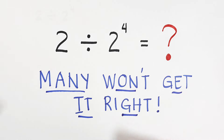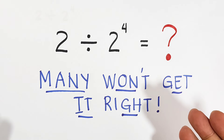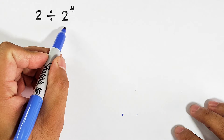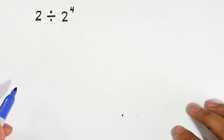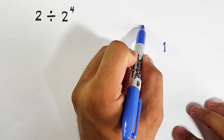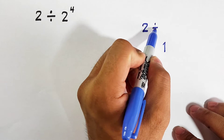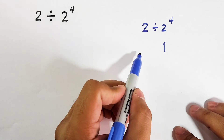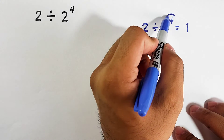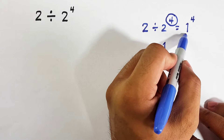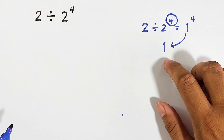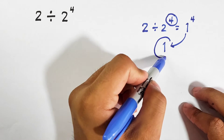Let us discuss so that you can get the correct answer. We have this given expression: 2 divided by 2 raised to the 4th power. If your answer is 1, you're doing it wrong. You might think that 2 divided by 2 equals 1, then copy 1 raised to the 4th power and answer 1 — but this answer is very wrong.